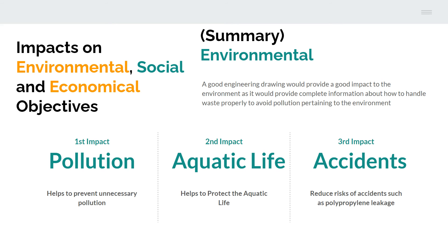The next question asks for a summary of the impacts on environmental, social, and economical objectives. In terms of the environmental objective, a good engineering drawing would provide a good impact to the environment as it provides complete information about how to handle waste properly to avoid pollution. The three environmental impacts are: first, it helps prevent unnecessary pollution; second, it helps protect aquatic life; and third, it helps reduce the risk of accidents such as polypropylene leakage.